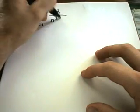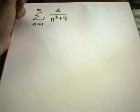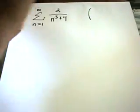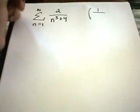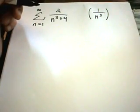In this video I'm going to do some examples using the direct comparison test and the limit comparison test. My first example: suppose I want to look at the series from 1 to infinity of 2 over n cubed plus 4. A good idea in these problems is to look at the highest power on top and the highest power on the bottom. The highest power on top is just a number — the number is kind of irrelevant. The highest power on the bottom is n cubed.